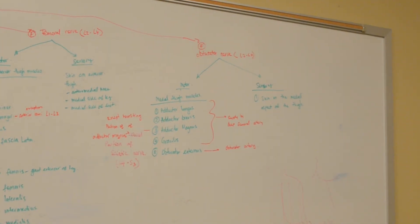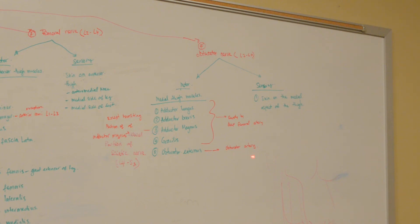For the obturator nerve of the lumbar plexus, the motor component innervates the medial thigh muscles, which include the adductor longus, adductor brevis, adductor magnus, gracilis, and obturator externus. All of the medial thigh muscles are supplied by the deep femoral artery, except for the obturator externus, which is supplied by the obturator artery. An additional exception is that the hamstring portion of the adductor magnus is innervated by the tibial portion of the sciatic nerve. The sensory component of the obturator nerve innervates the skin on the medial aspect of the thigh.